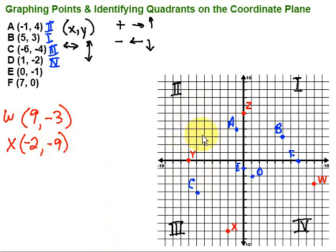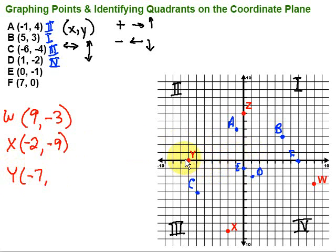One thing people sometimes get mixed up with: we want to count the lines, not the spaces. All of our points are going to fall on those lines. For point Y, going from the origin, I go left 1, 2, 3, 4, 5, 6, 7. Since I went to the left, that's negative 7. Then how far up or down? Zero — I don't go up or down at all. So it's located at the point negative 7, 0.